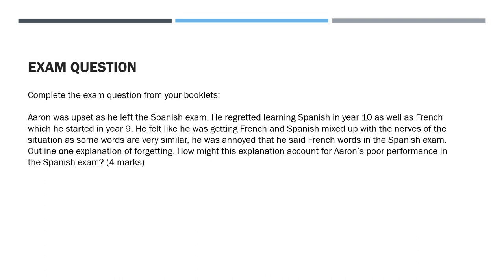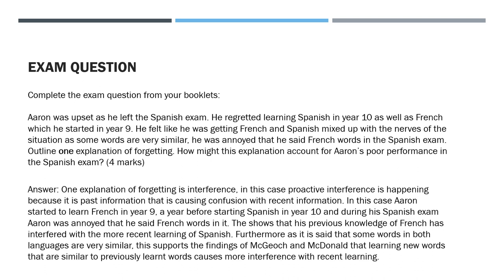Here is a model answer: One explanation for forgetting is interference. In this case, proactive interference is happening because it is past information causing confusion with recent information. Aaron started learning French in year 9 — a year before starting Spanish in year 10 — and in his Spanish exam, he said French words. This shows that his previous knowledge of French has interfered with the more recent learning of Spanish. Additionally, as some words in both languages are very similar, this supports the findings of McGeoch and MacDonald — that learning new words similar to previously learned words causes more interference.